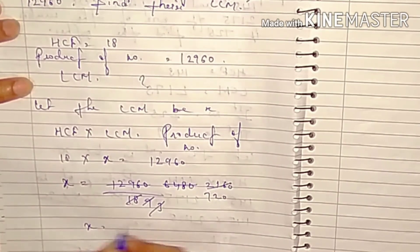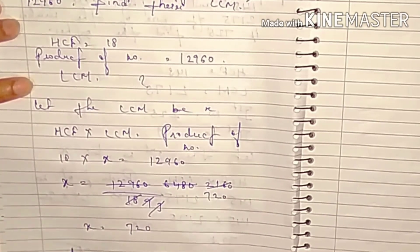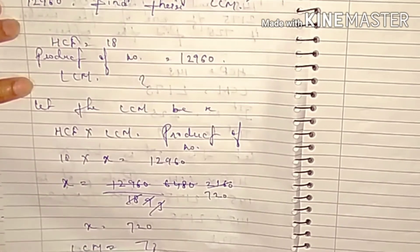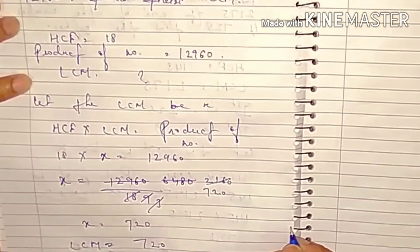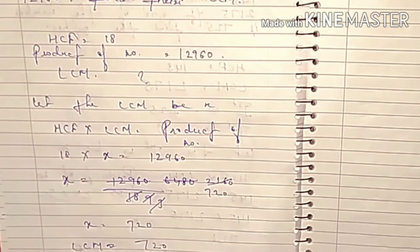X will get 720. I'll say LCM is equal to 720. That's our answer. So student, question of fifth day is complete.